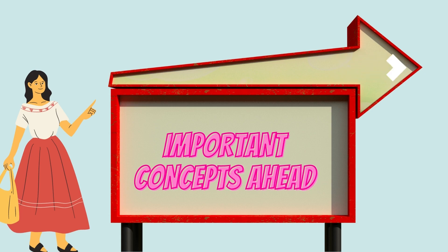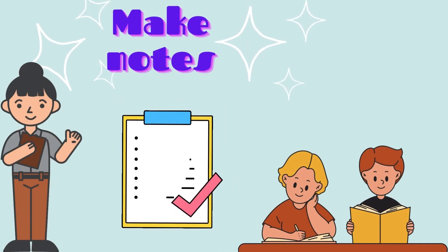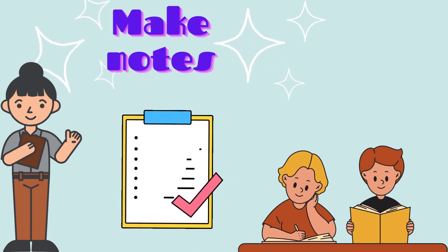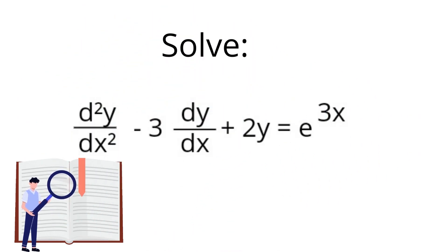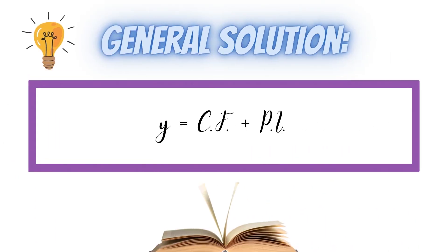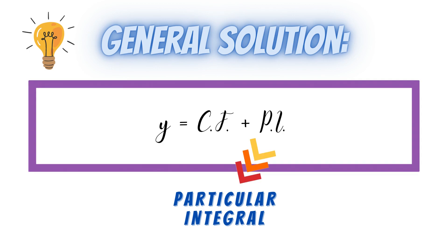There are some very important concepts ahead, so I request you to make notes while you watch this video so that you can revise them later. If you have any doubt, you can get back to this video and your notes to clear your doubts. The general solution for these types of equations, as we have seen in earlier videos, is y equals CF plus PI, where CF is the complementary function and PI is the particular integral.